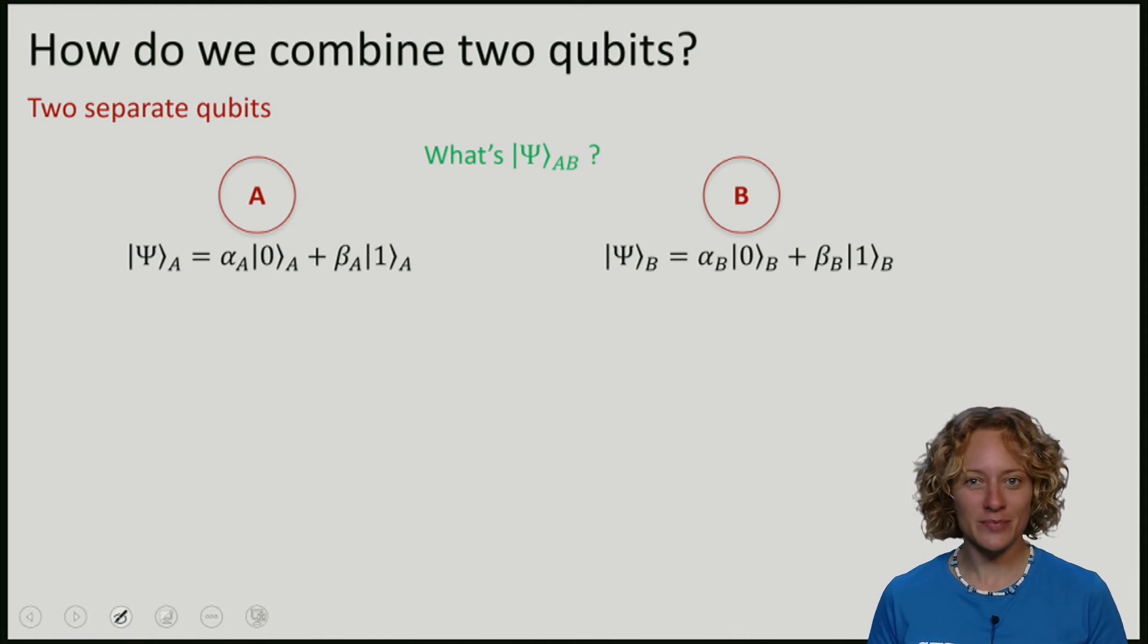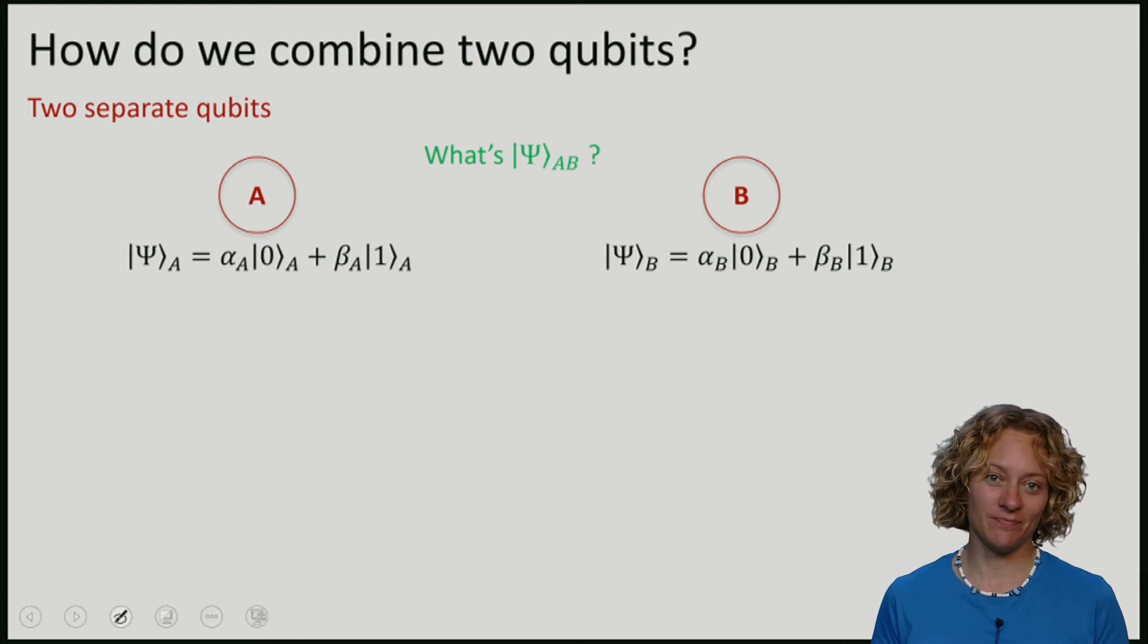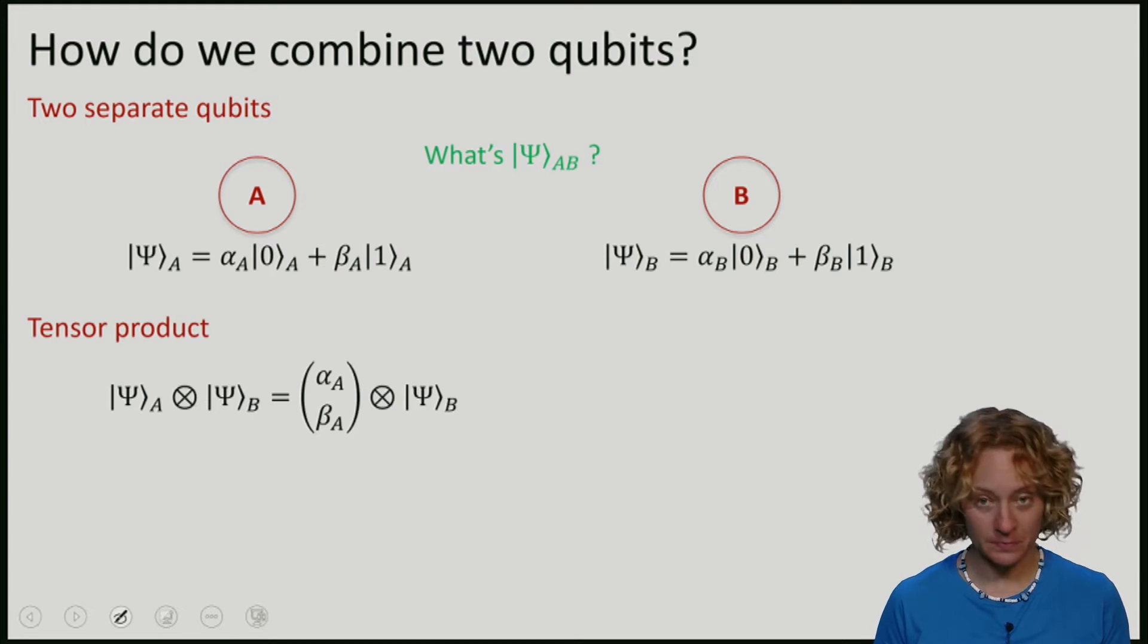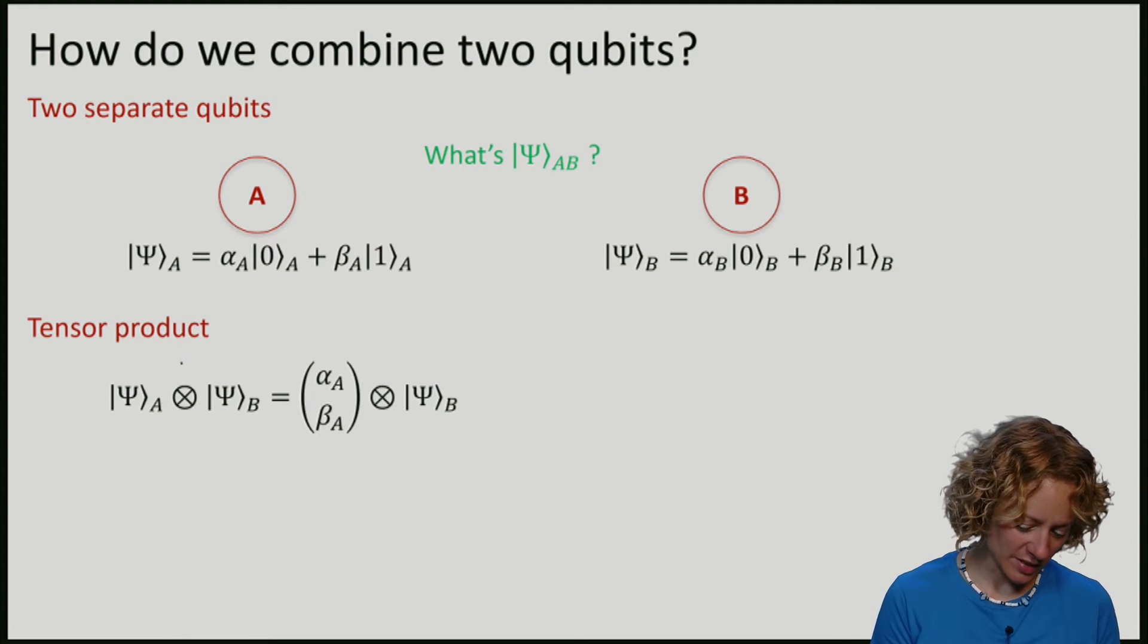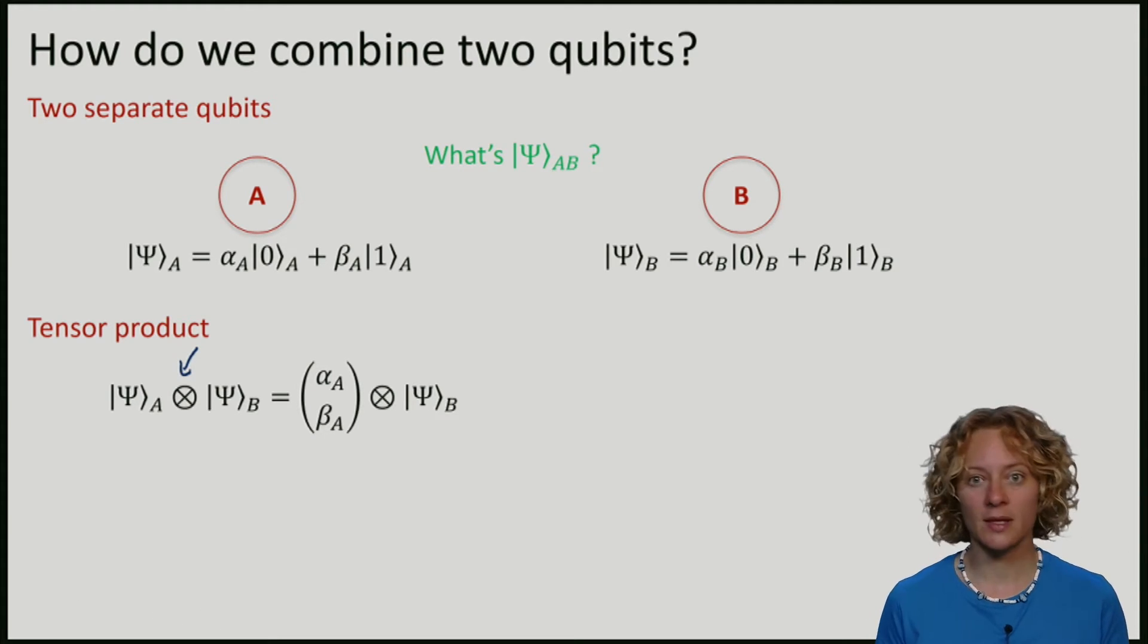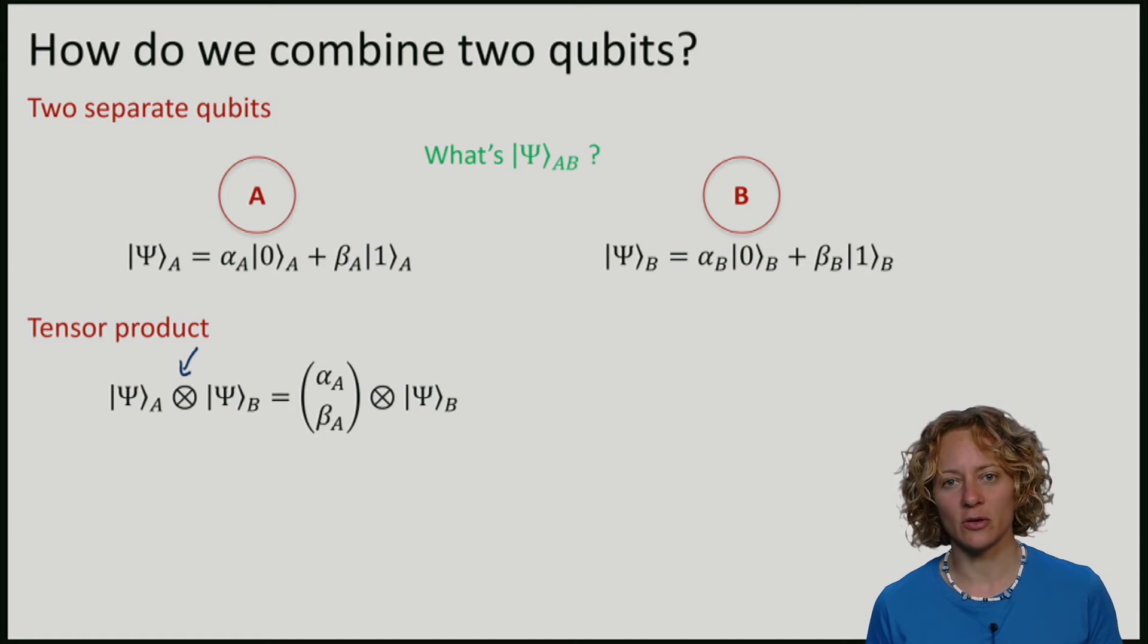It turns out that there is a very simple procedure called the tensor product with which we can compute the joint state. So how does this work? The tensor product, denoted by this symbol here, is defined as follows.